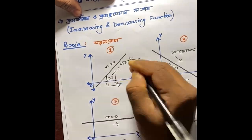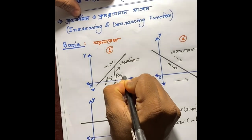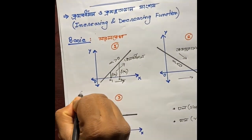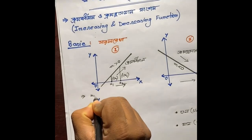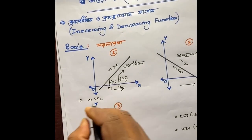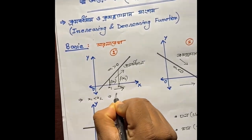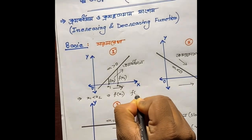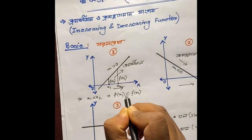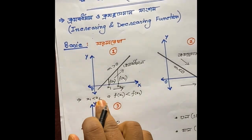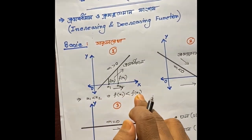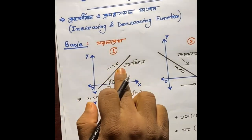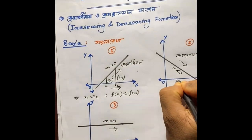ફાંક્શનેર મન્ટા: જોદી x1 < x2, તો fx2 > fx1. જોદી x1 એર ફાંક્શનેર માણ x2 એર ફાંક્શનેર માણ કરતા બરો હોય, અત્તા x1 < x2 હોય. જોદે fx1 < fx2 હોય, તો ક્રમ-બর્ধমান ফাংশন।